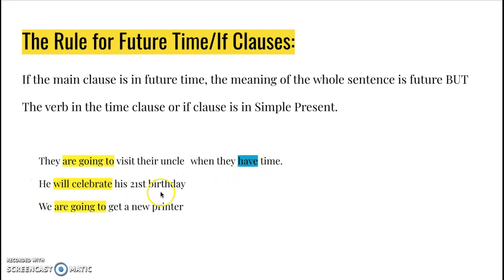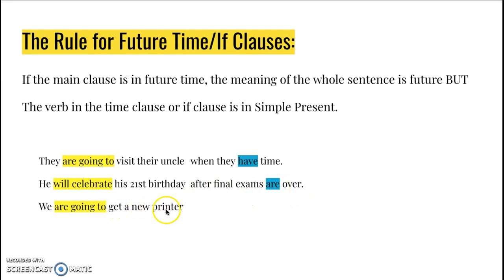Let's try another one: 'He will celebrate his 21st birthday after final exams are over.' So here's my time clause — again, simple present. And 'we are going to get a new printer' — here's our future — but in our if clause we're going to use simple present: 'if this one doesn't work.'